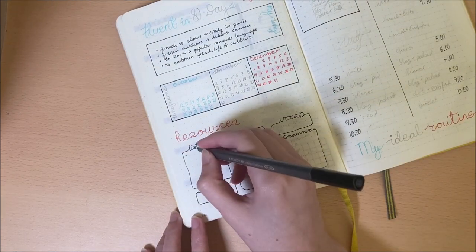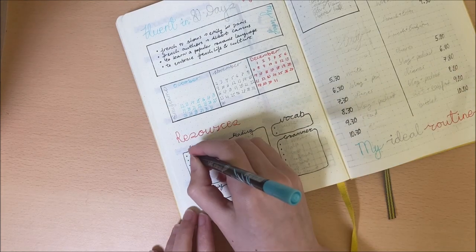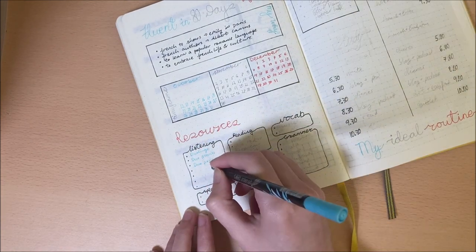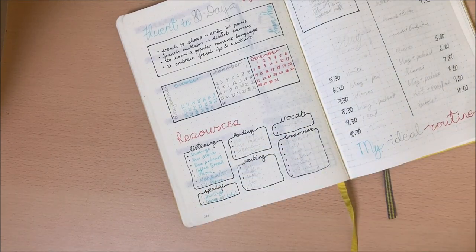So I have gone ahead and put in the days for October, November and December which are the 80 days I wish to cover this challenge in, as well as my reasons why I wish to learn French. I've also added the resources I'm using for each category as listed before.